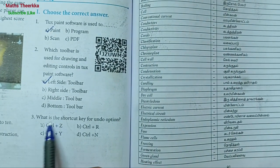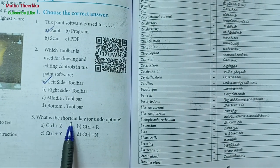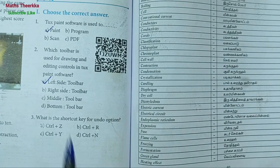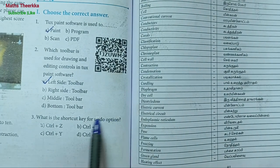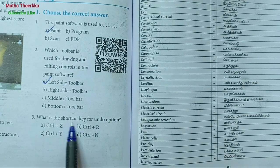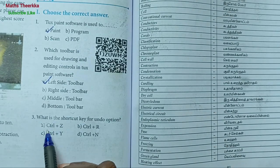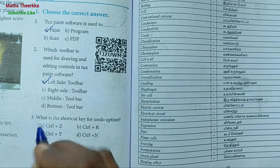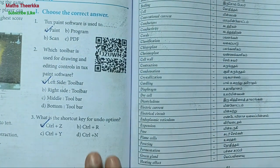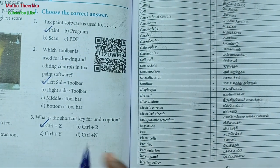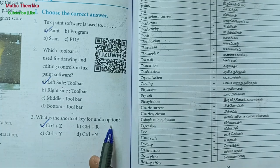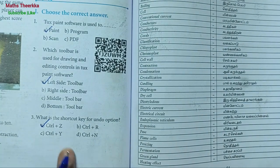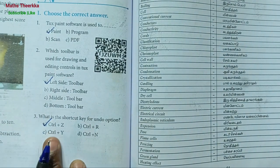Third one: what is the shortcut key for undo option? The shortcut key for undo is Control plus Z — that is CTRL+Z. So the answer to what is the shortcut key for undo option is Control plus Z.